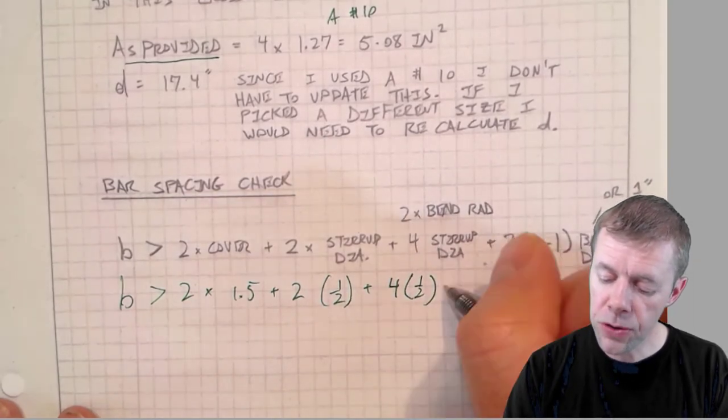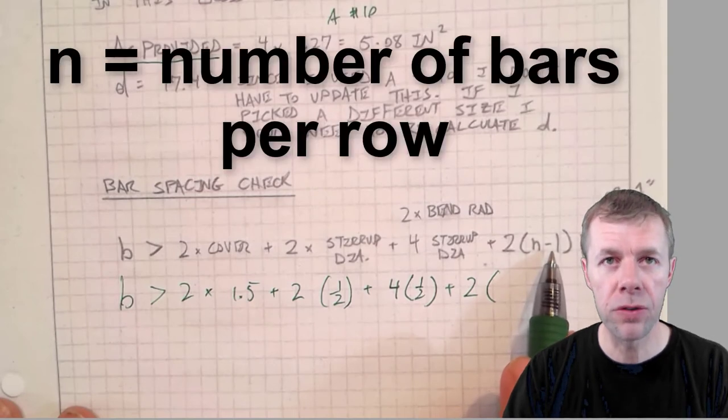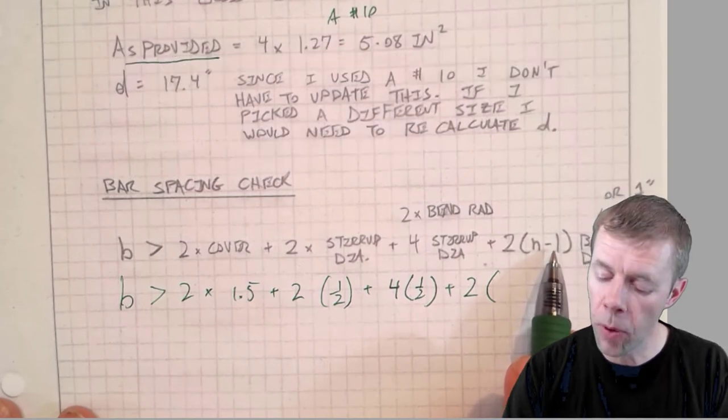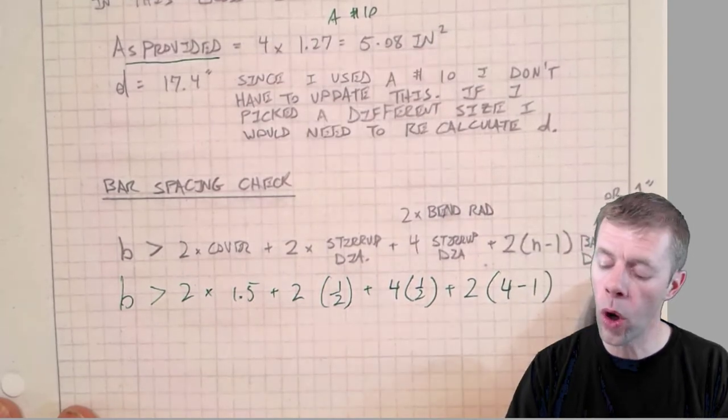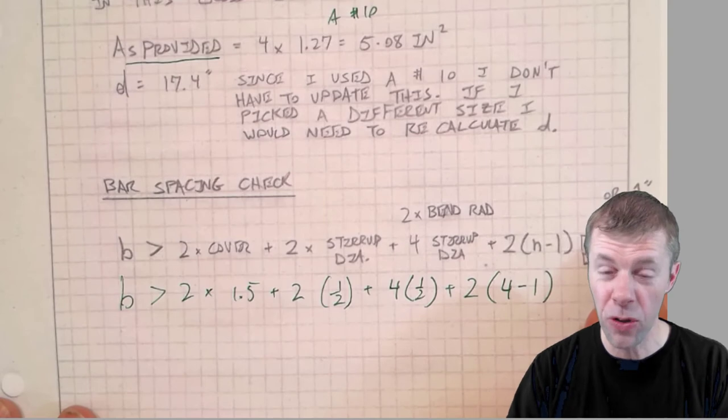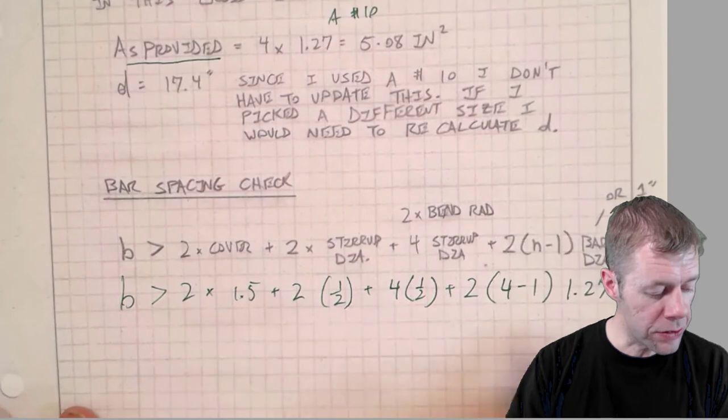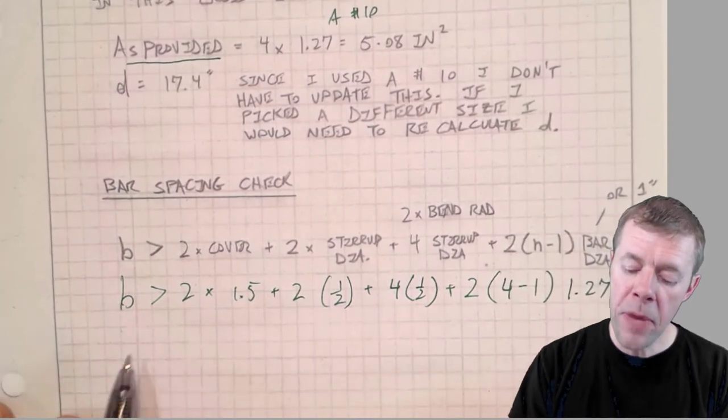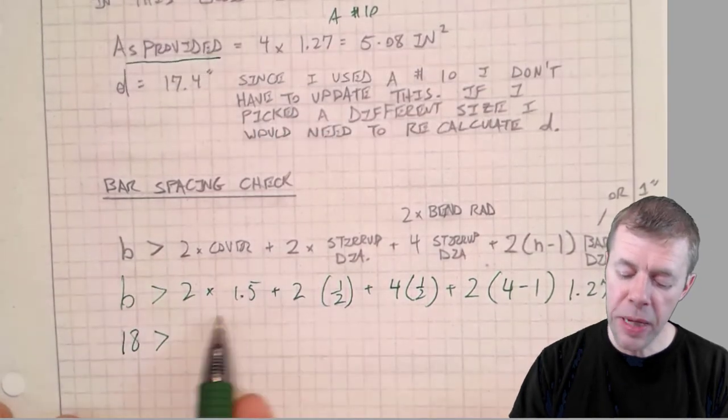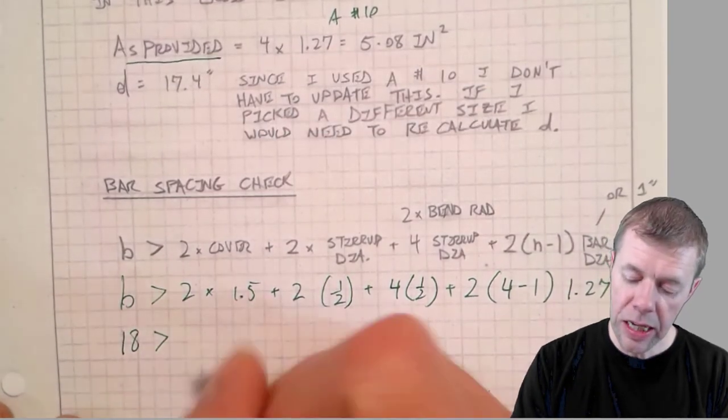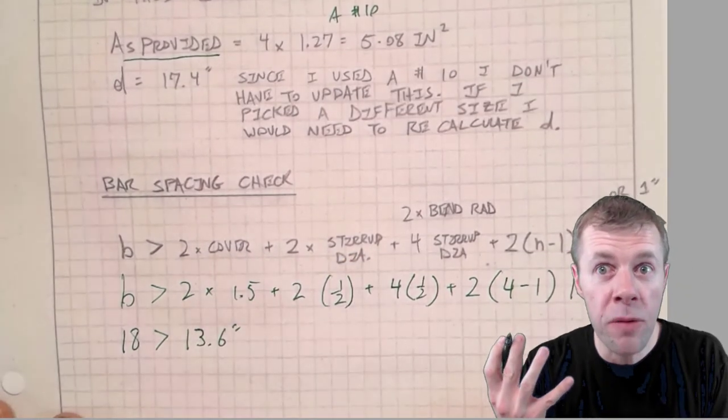Plus two times n, where n is the number of bars. I'm using 4 bars, so 4 minus 1, times my bar diameter or 1 inch, whichever is larger. I'm using 1.27 inches. This tells me what my minimum B is. My actual B I provided was 18 inches and the minimum B that I need is 13.6 inches. My B is greater than my minimum, yes, I'm good.